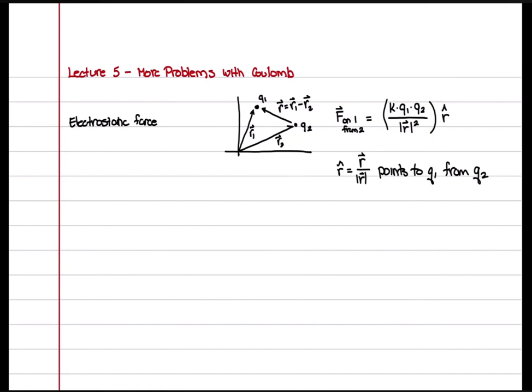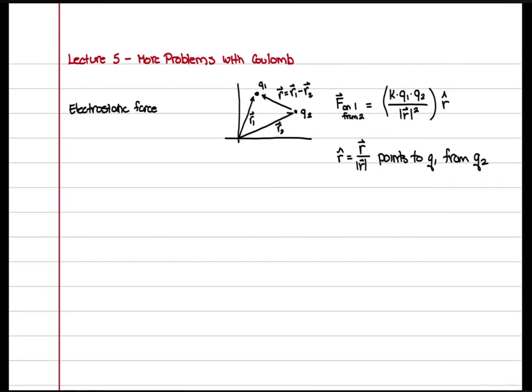We worked through some problems last time where we were very explicit about calculating all these steps. Once we get confidence doing that, we might not have to do all those steps explicitly. So suppose I have a mass that hangs from a string and it has an overall charge q, and then above the ground is another charge with a charge negative q — same but opposite sign.